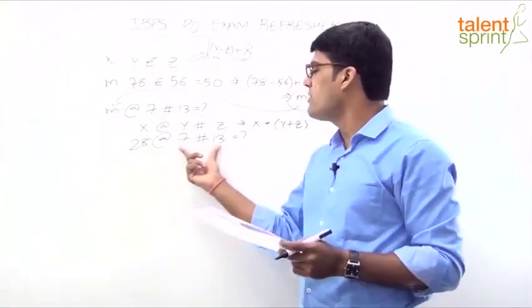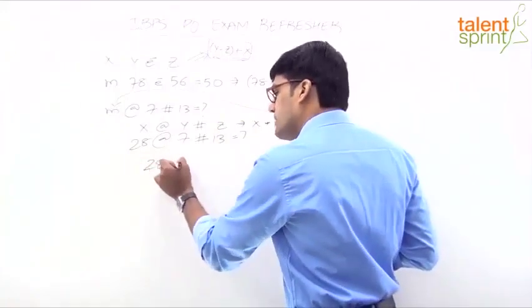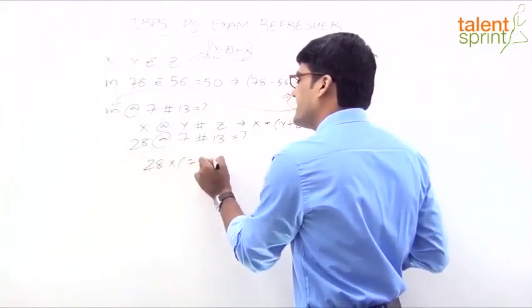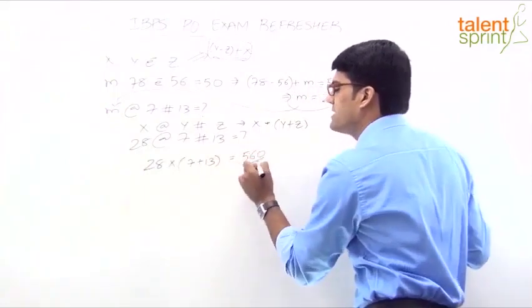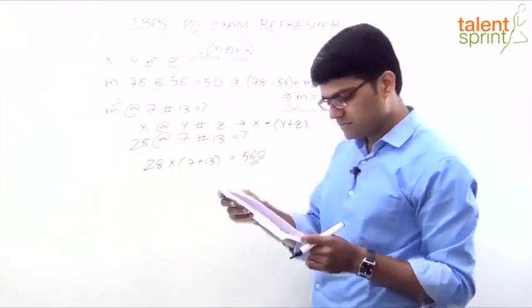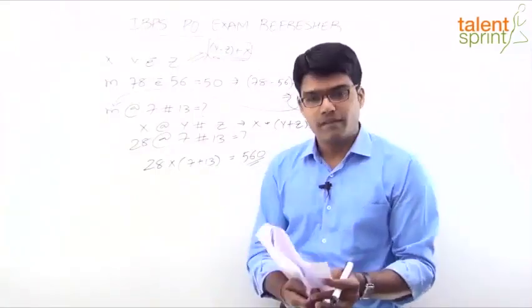28 is multiplied by the sum of 7 and 13. So 28 into sum of 7 and 13. 7 plus 13 is what? 20. 20 into 28 is 560. And that's your answer. Which question is this? Option 1, 560.